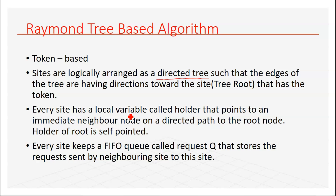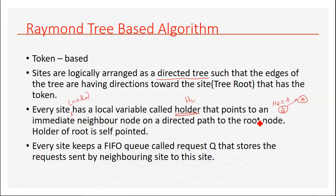Every site — that is, every node of the tree — has a local variable called the holder variable. The holder variable H of a site points to an immediate neighbor on the directed path. For example, if one end is node A and another is node B, then the holder of B will equal A, because the holder variable holds the pointer to the immediate neighbor in the upward direction. Every node's holder variable is meant to represent its parent.